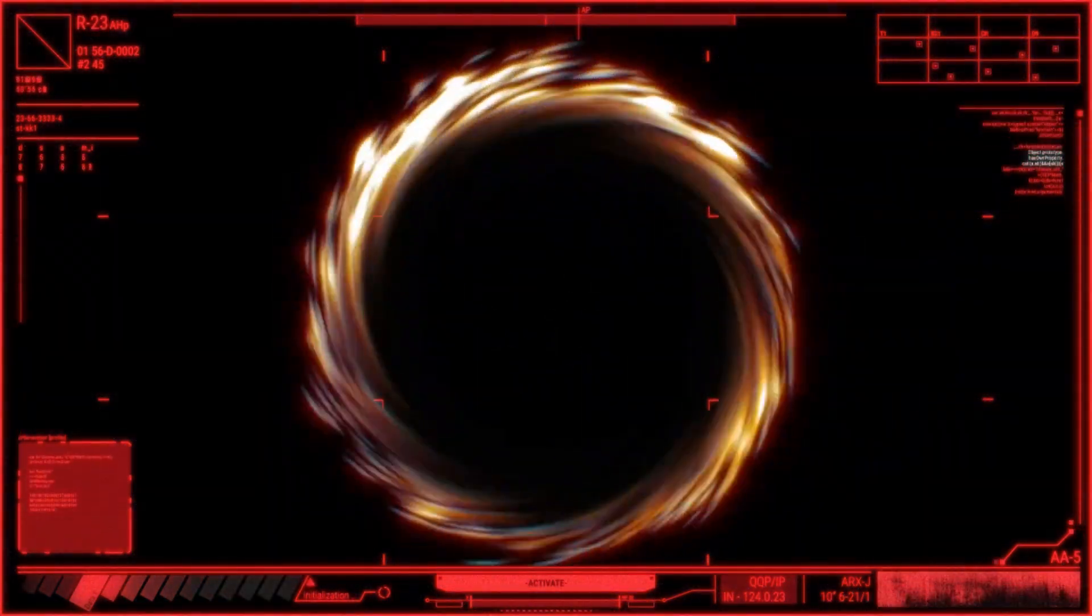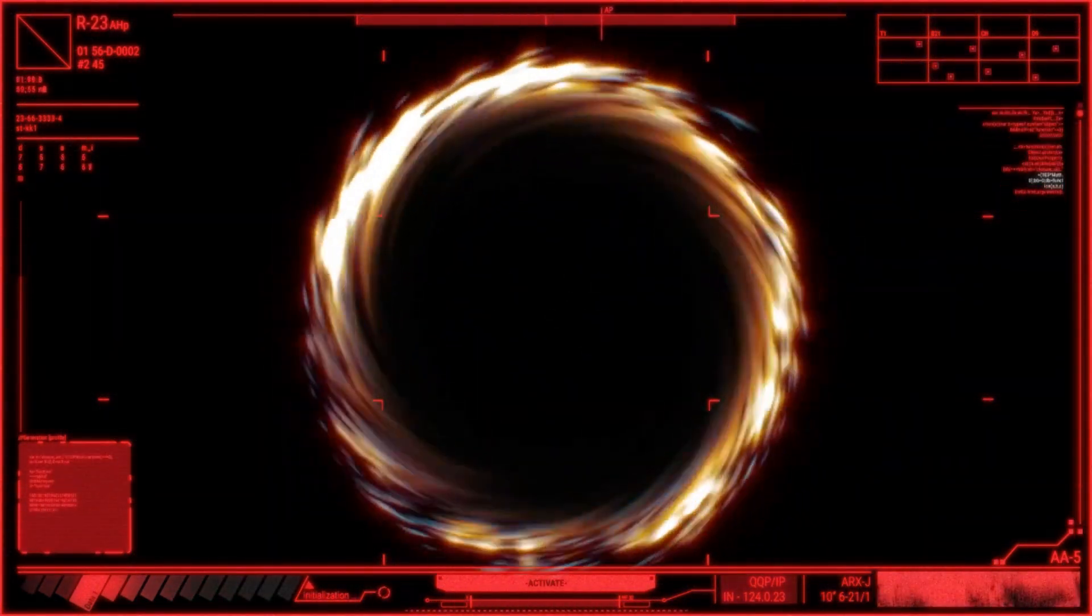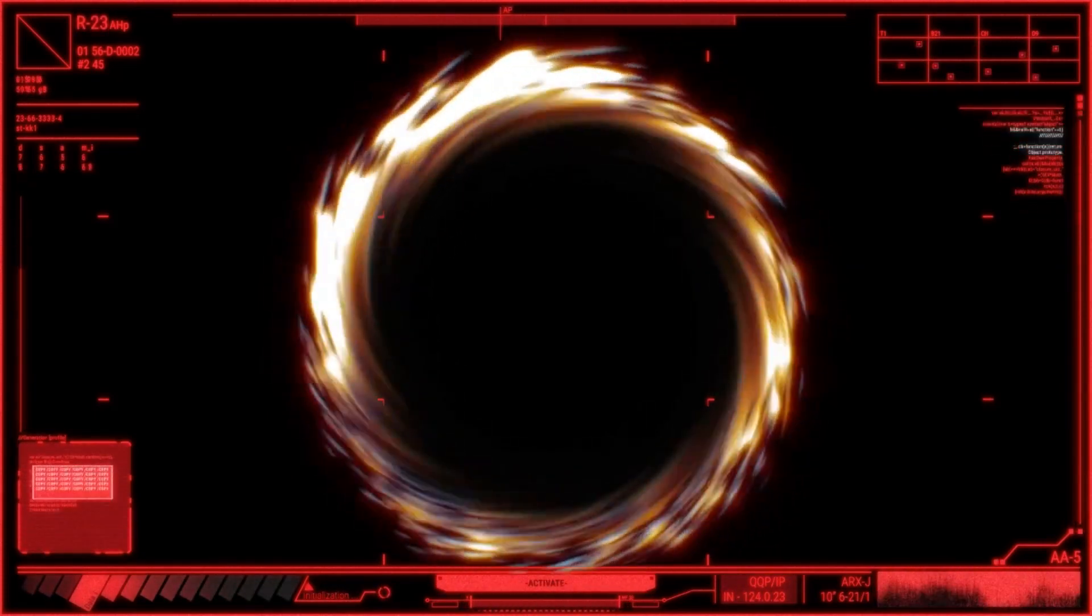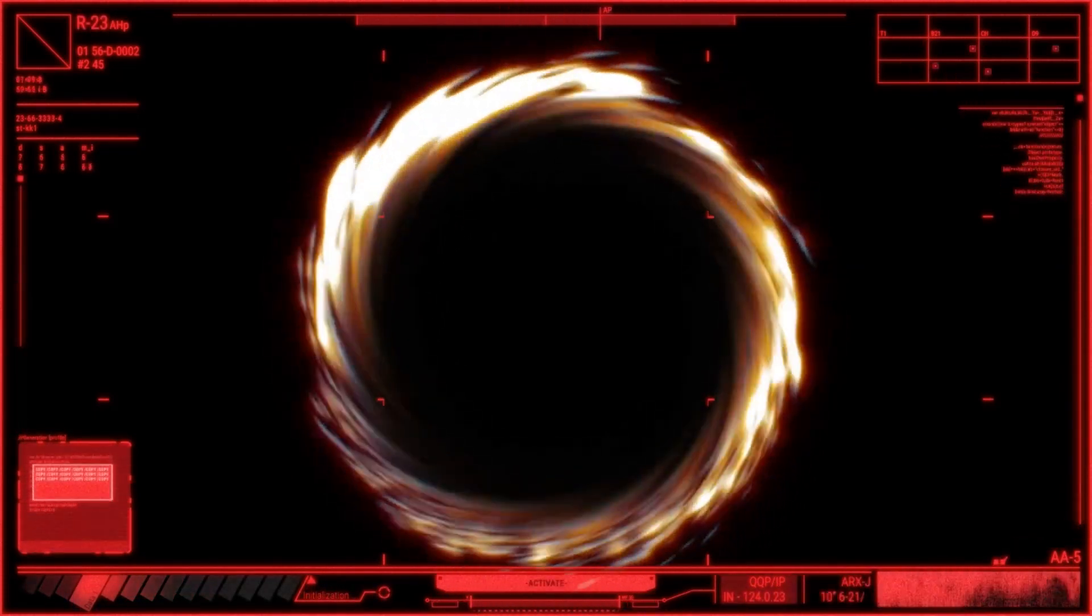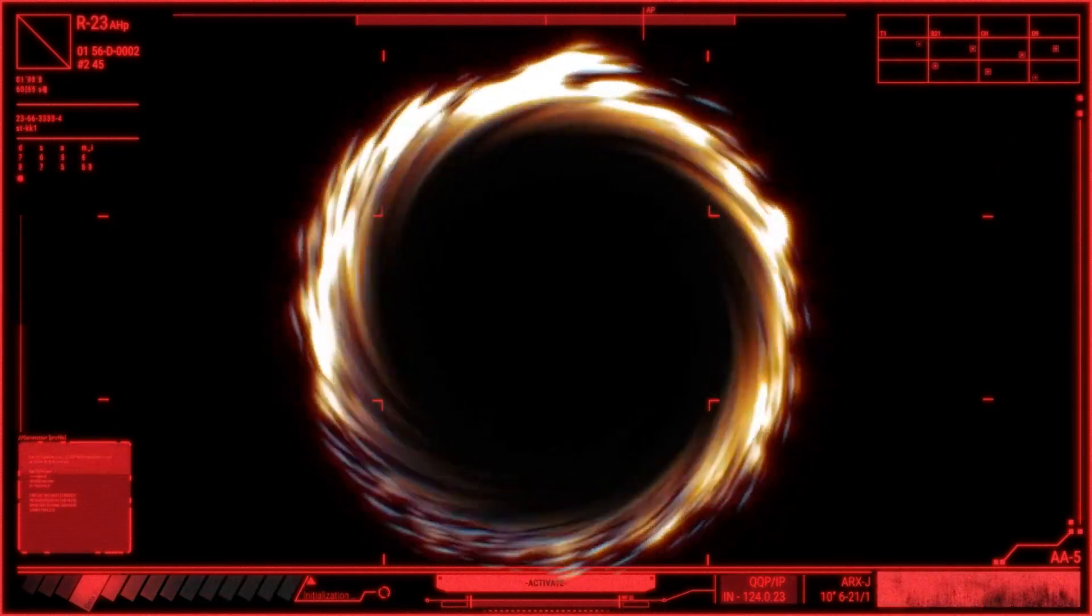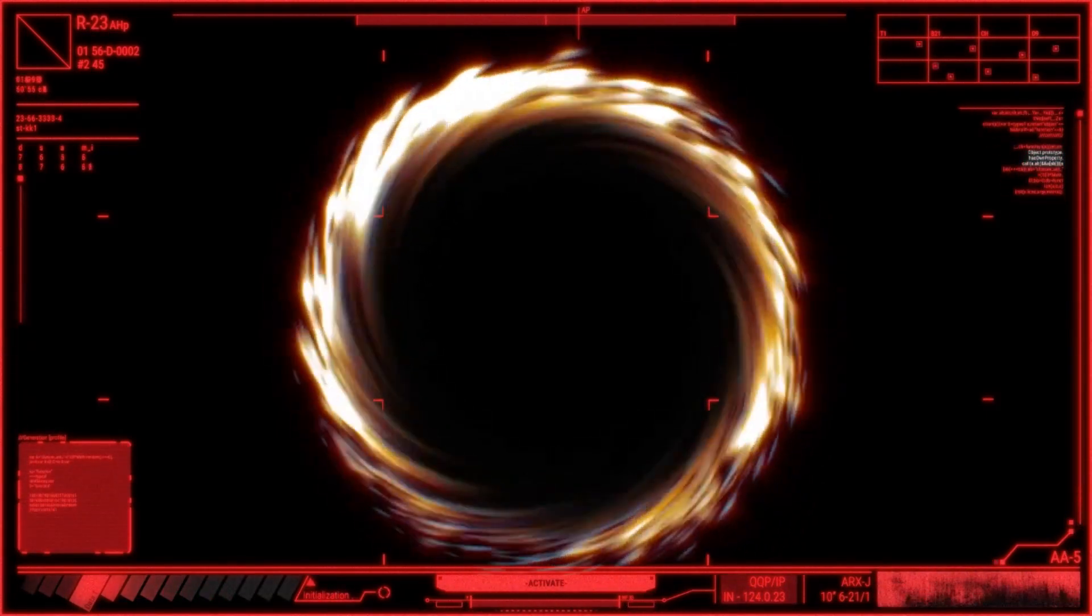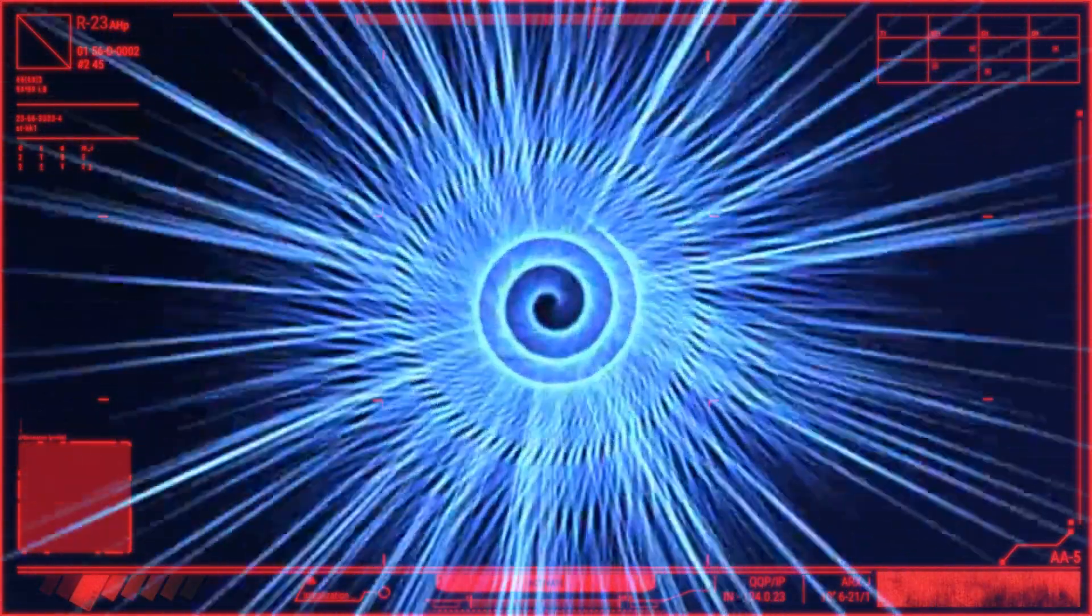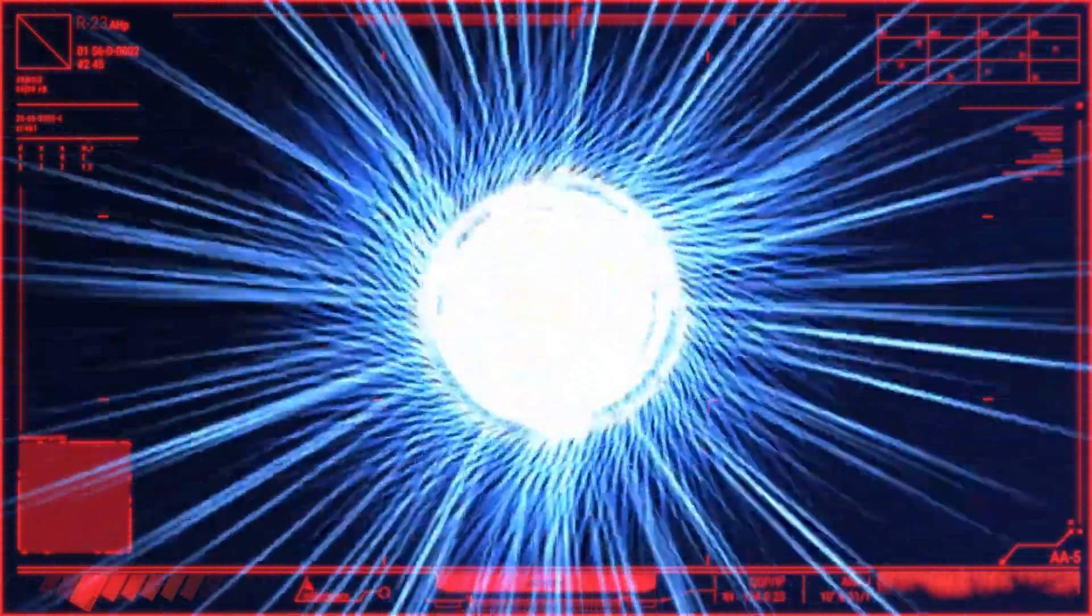Ergosphere. Surrounding the rotating black hole, there is a region called the Ergosphere. In this region, spacetime is dragged along with the rotation of the black hole. As a result, objects within the Ergosphere are forced to rotate in the same direction as the black hole. The Ergosphere plays a crucial role in extracting energy from the black hole through a process called the Penrose Process.